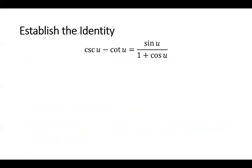Let's look at an example. If I have the identity cosecant u minus cotangent u is equal to sine u over one plus cosine u. When we are establishing an identity, we don't work on both sides at the same time. The goal is to start with one side and just keep manipulating that side until the result is the other side.